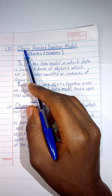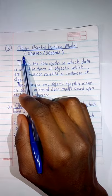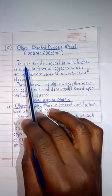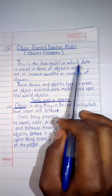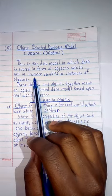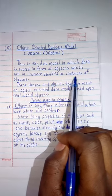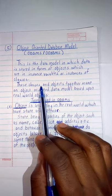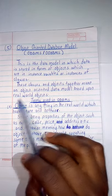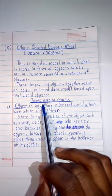For the fifth model, we have the object-oriented database model. This is the data model in which data is stored in the form of objects, which are instances of classes. These classes and objects together make up an object-oriented database model based upon real-world objects.